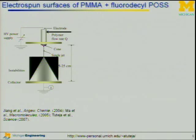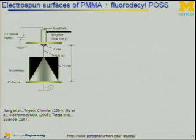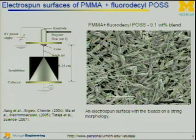One technique we can use is electrospinning to make this roughness on substrates. You hook up a high voltage power supply to the needle of a syringe that contains a polymer in solution, and the other end connects to a collector. When you turn on the high voltage power supply, a Taylor cone is formed and a small single jet is formed. As it's falling, the solvent is allowed to evaporate, and depending on parameters such as power supply voltage and flow rate, you can get different morphologies.